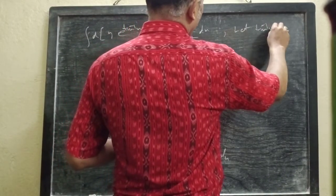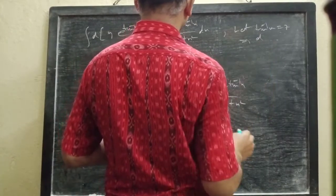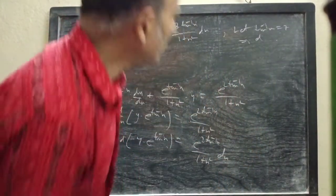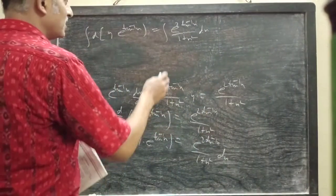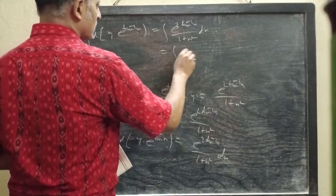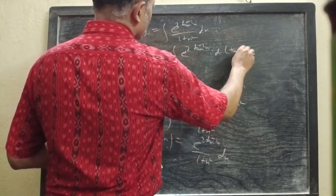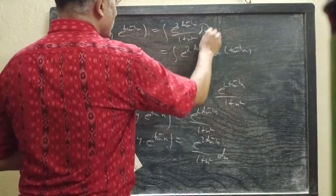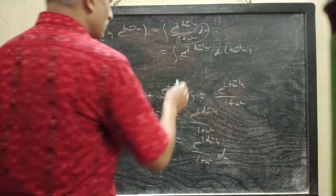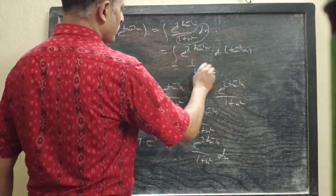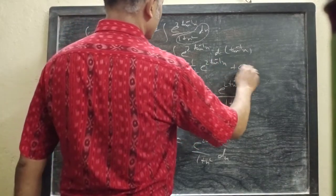Let tan⁻¹x = z, so dx/(1 + x²) = dz. The integral becomes ∫e^(2z) dz. We can write d of tan⁻¹x instead. This is equivalent to e^(tan⁻¹x). So we get ½ e^(2 tan⁻¹x) + c.